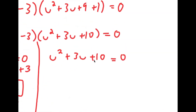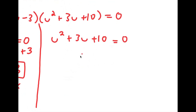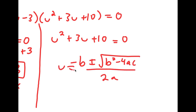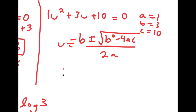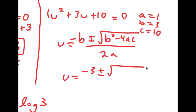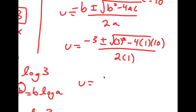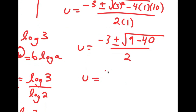Going back, we have u squared plus 3u plus 10 equals 0. Using the quadratic formula — negative b plus or minus the square root of b squared minus 4ac all over 2a — with a equals 1, b equals 3, and c equals 10, I get u equals negative 3 plus or minus the square root of 9 minus 40, all over 2. This equals negative 3 plus or minus the square root of negative 31 over 2. Since the square root of negative 31 is a negative number under the radical, that doesn't yield a real solution, meaning my only real solution is x equals 1.539.